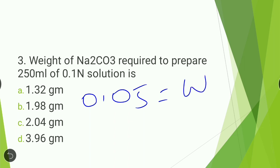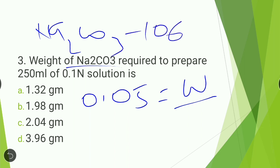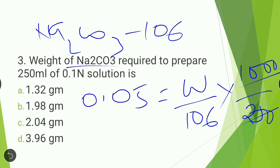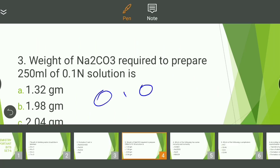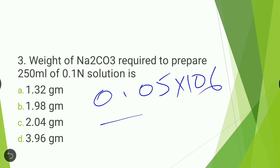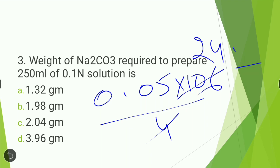Now substituting: 0.05 = weight / (gram molecular weight of Na2CO3). The gram molecular weight of Na2CO3 is 106. So 0.05 = weight / 106 × 1000 / 250. This gives 0.05 × 106 / 4, approximately 1.325 grams. The answer is 1.325 grams.